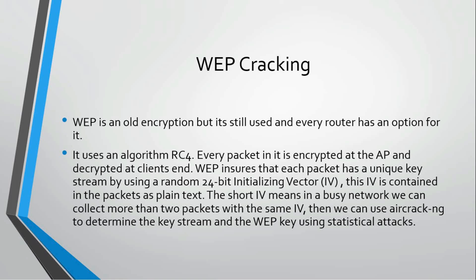In a busy network, we can have two packets with the same random number. Each packet is sent with a random IV, but because 24 bits is not a very large number, eventually two packets can contain the same IV. We need to capture two packets with the same initialization vector.